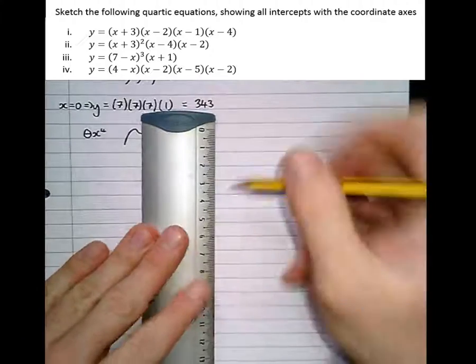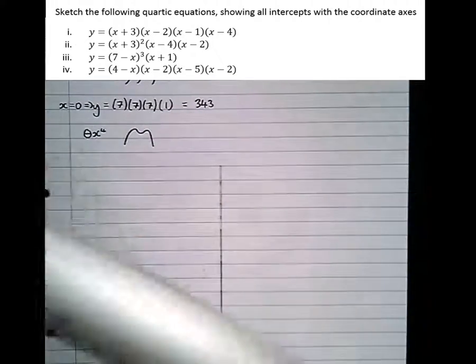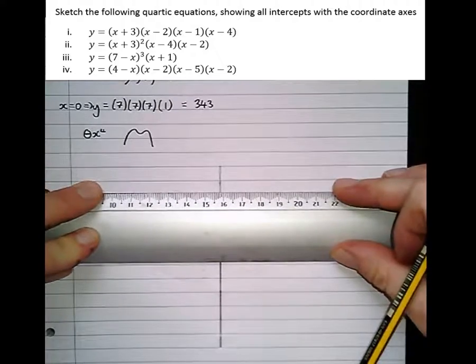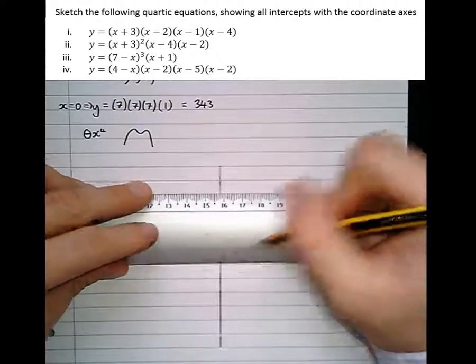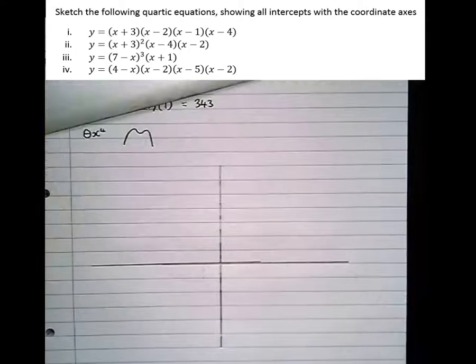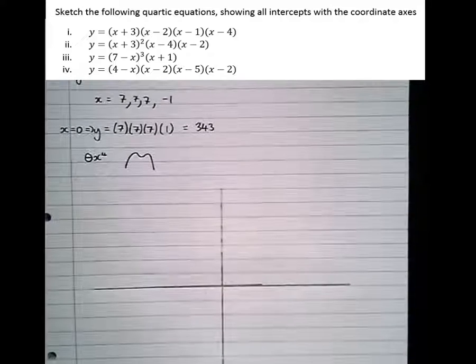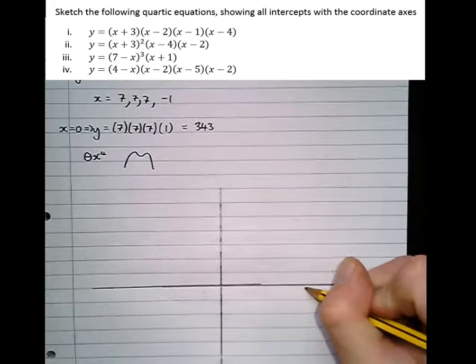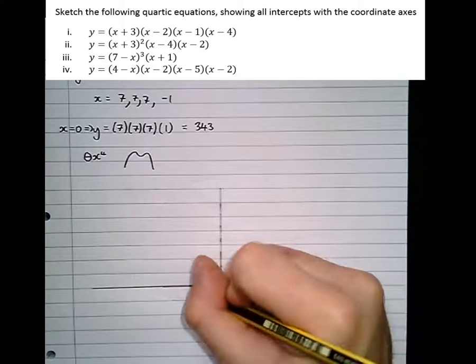So drawing it, drawing the axes again, must do it in pencil in case there's anything wrong with the graph so you've got a chance to correct it. Okay, so there's my axes. And the roots, there's three roots at 7 and one root at minus 1.